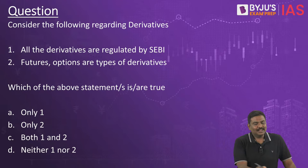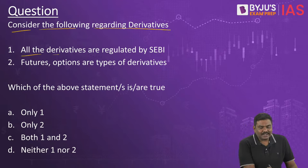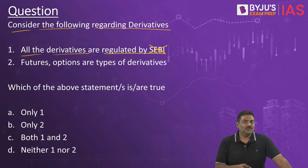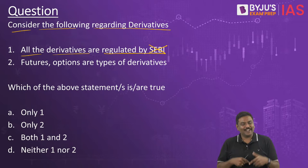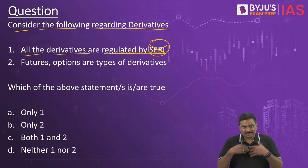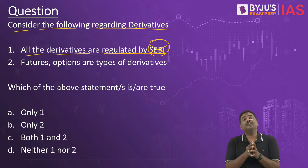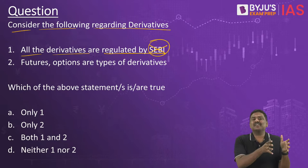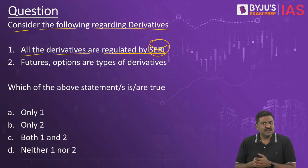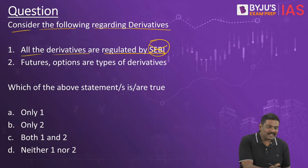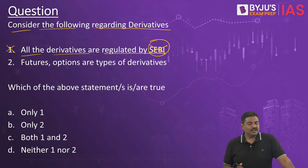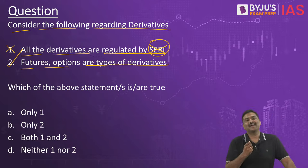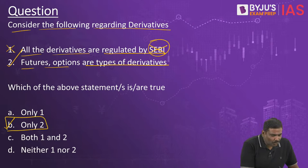MCQ: Consider the following regarding derivatives. Statement 1: All derivatives are regulated by SEBI — this is wrong. There are different types of derivatives: futures, options, swaps, etc. Some come under SEBI's regulation, while others, such as interest rate swaps or currency derivatives, come under the regulation of the Reserve Bank of India. Statement 2: Futures and options are types of derivatives — this is correct. Therefore, the right option is B, only Statement 2 is correct.